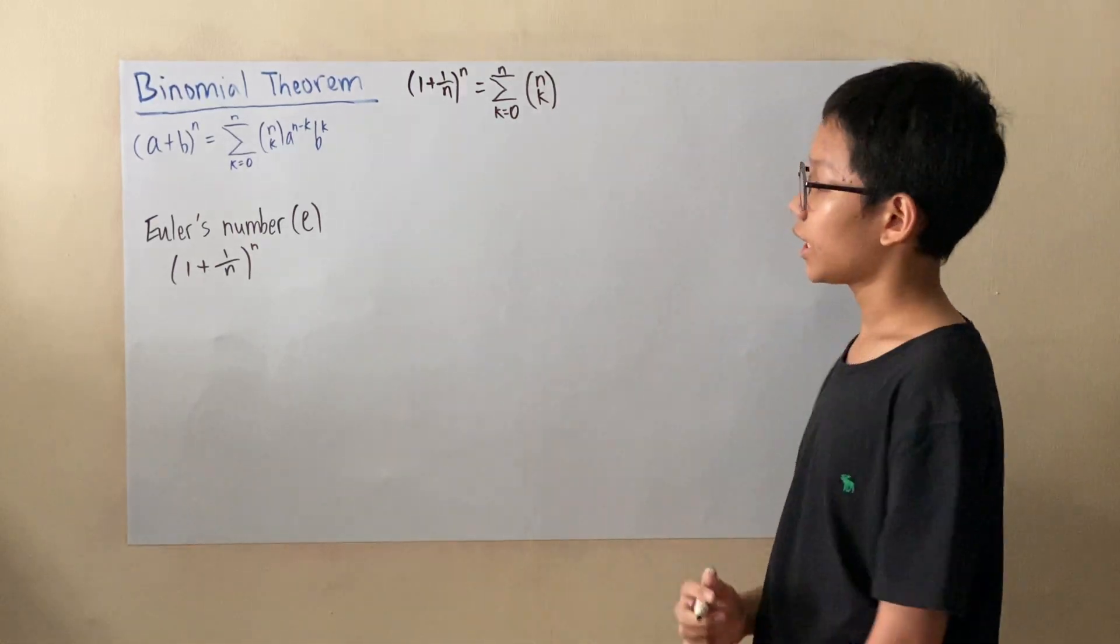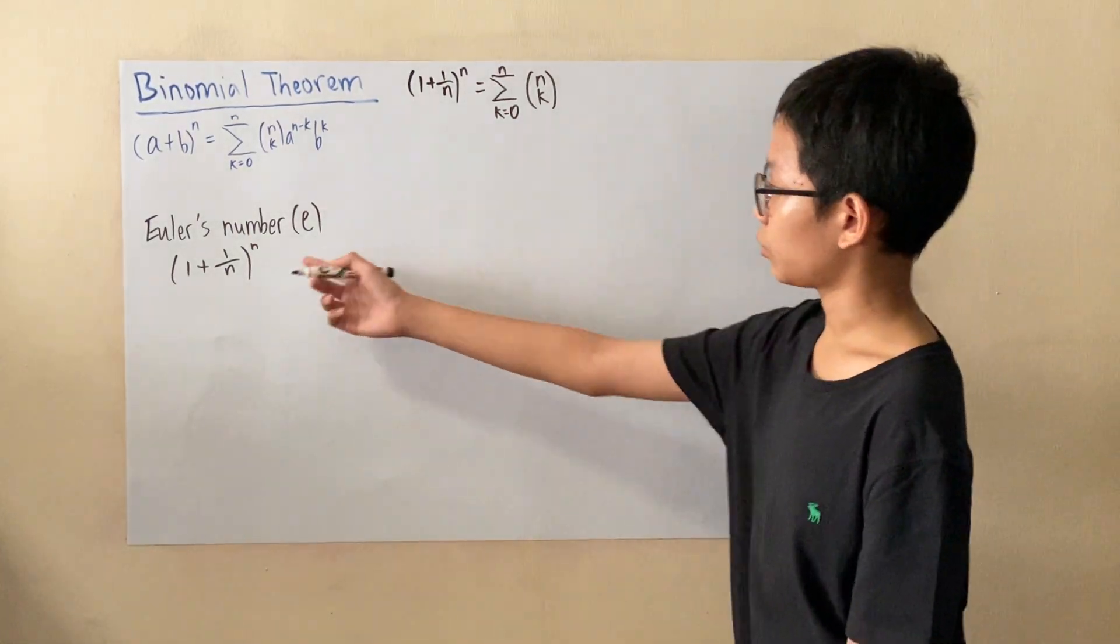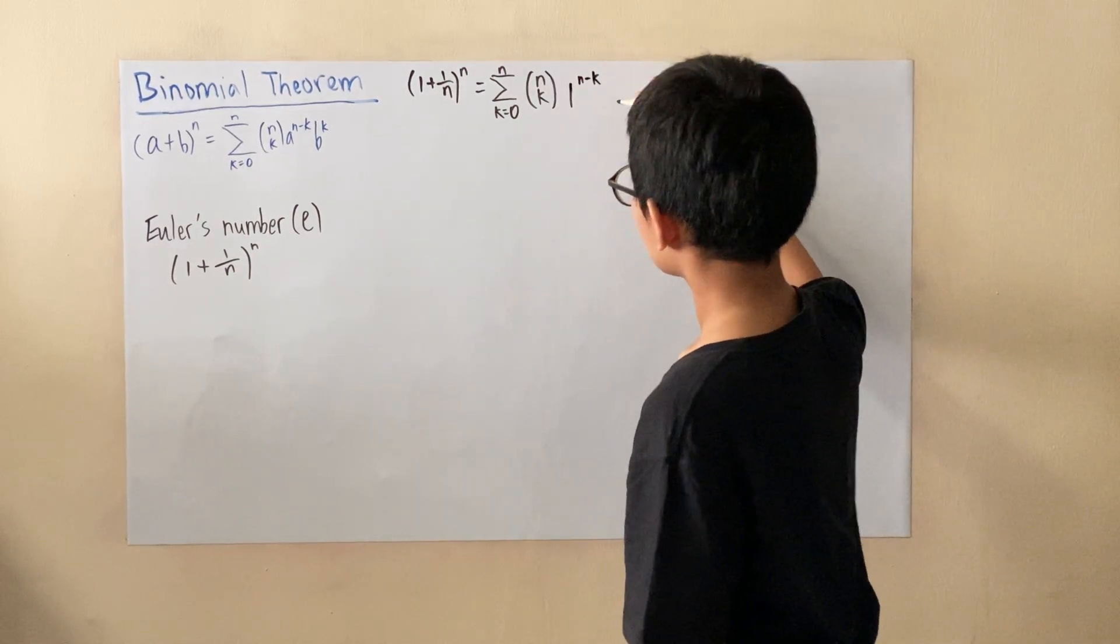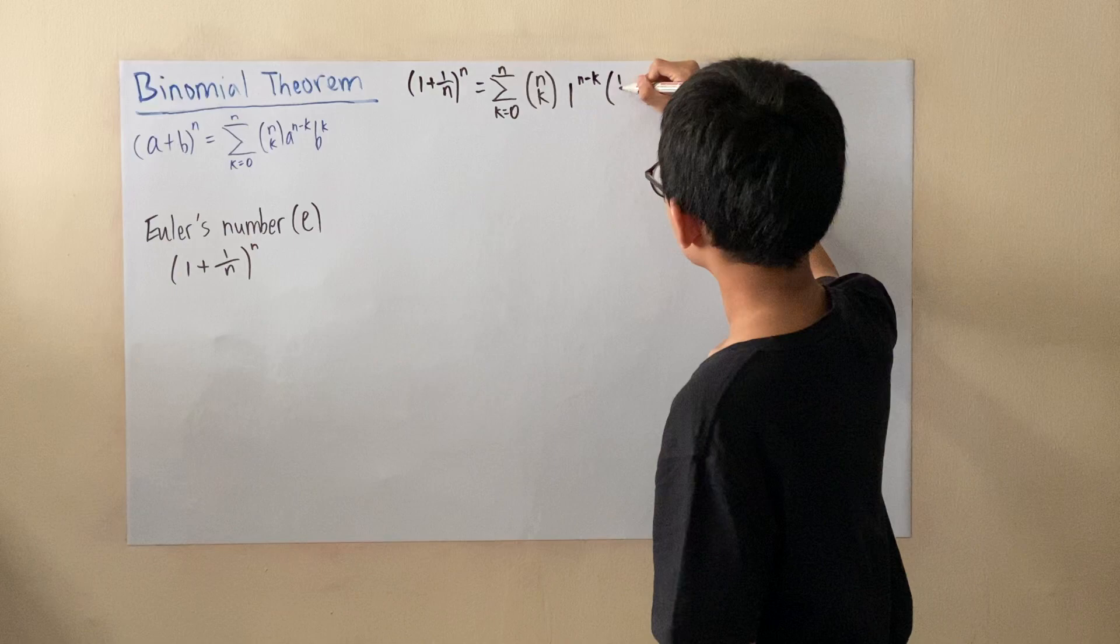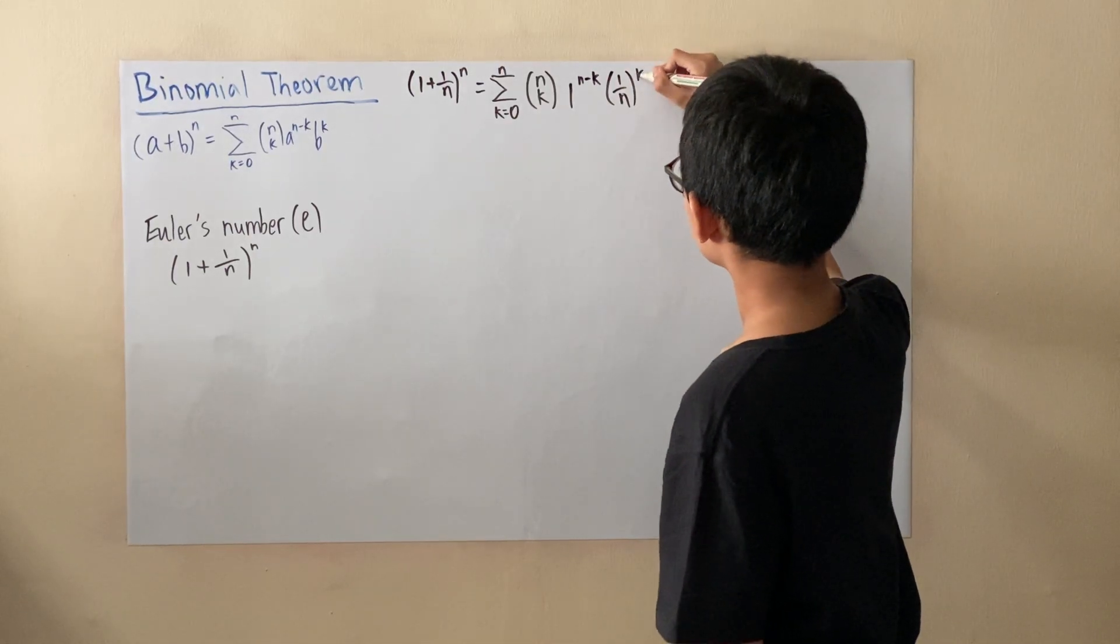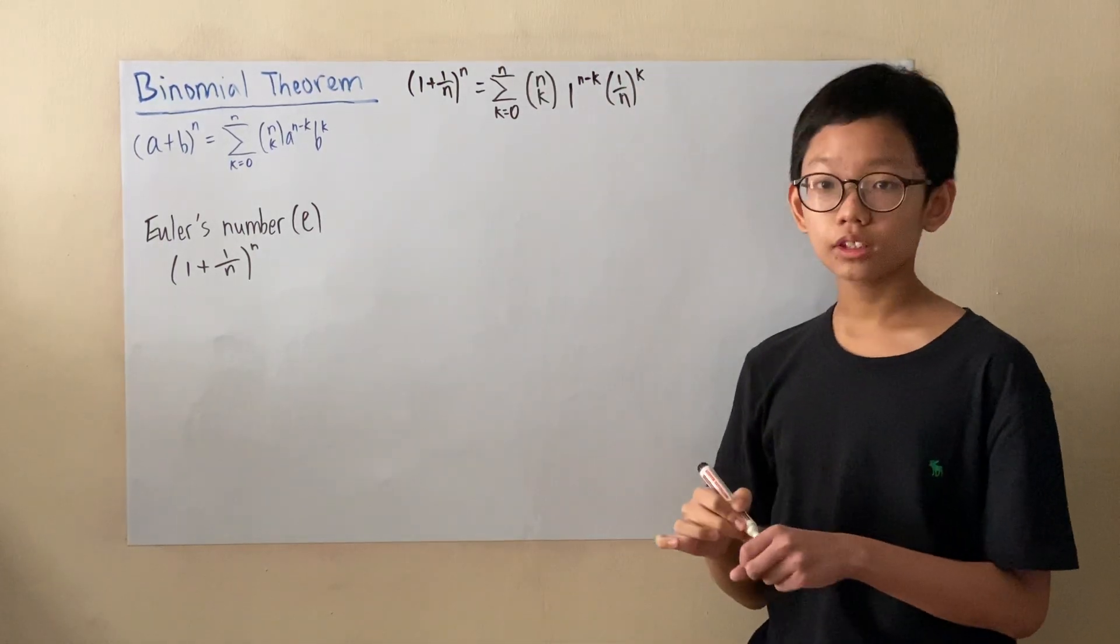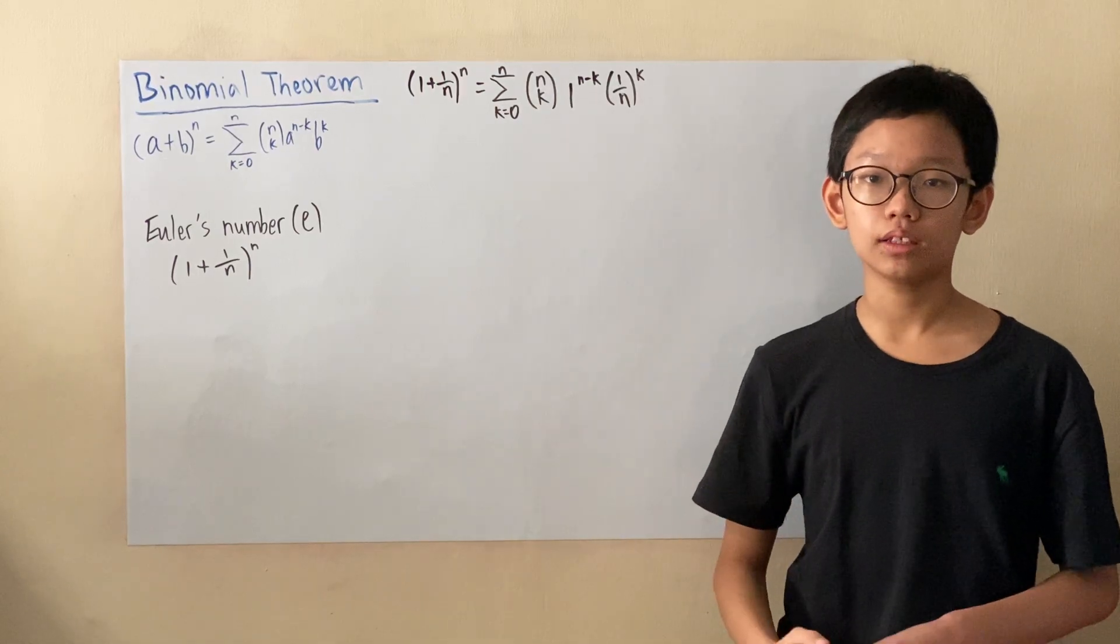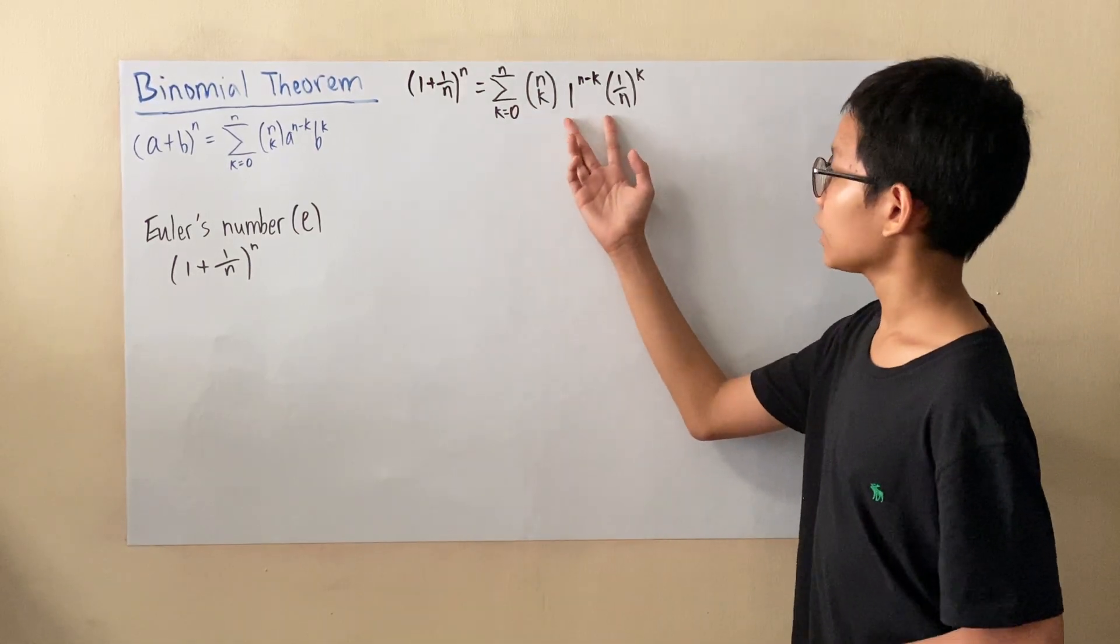In this case, we'll write A as 1 because A is 1, and B is 1/n. So now looking at this, take note that 1 to the power of anything is always 1. So we'll be multiplying it by 1 and this is not needed.